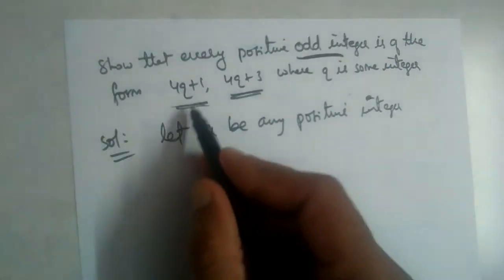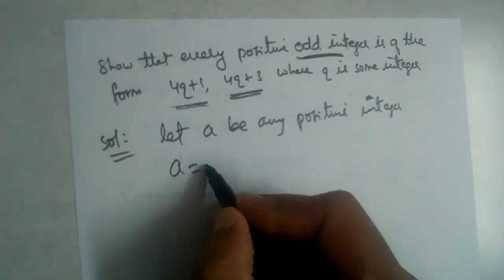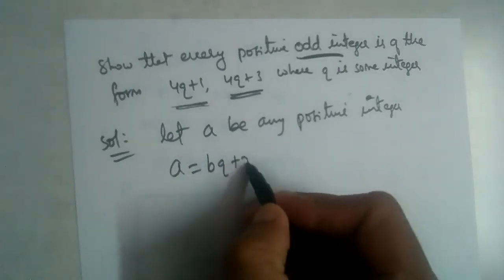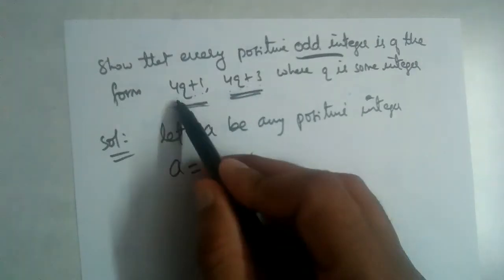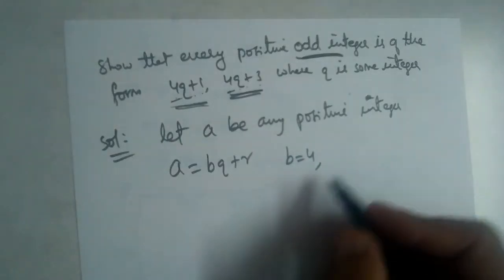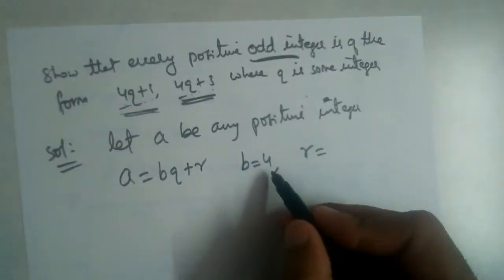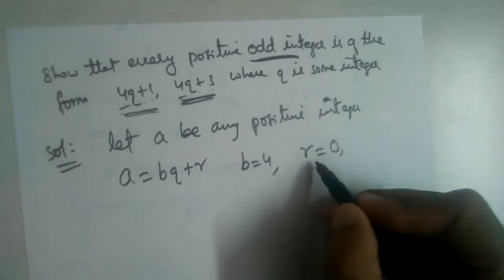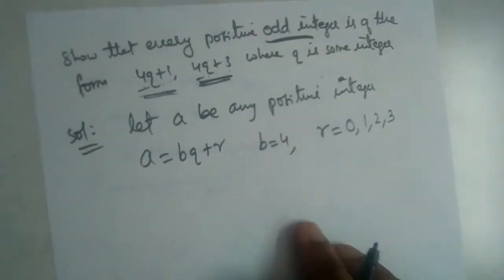What will be the value of b? We should see the question. Euclid's division algorithm is a equals bq plus r. The value of b is equal to 4. If b is 4, r will be less than 4, so it can be 0, 1, 2, 3. It cannot be equal to 4 or more than 4.